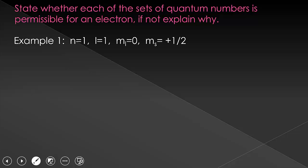Let's do a few examples where we decide if a set of quantum numbers is allowed, and if not, why. For each of these, you should pause and try to figure it out on your own first, and then continue on. Here we have N equals one, L equals one, M sub L equals zero, and M sub S equals plus one-half. Is this allowed? No, it's not allowed. This one is wrong because L is only allowed to equal zero up through N minus one. Since N equals one, one minus one means L is only allowed to equal zero.